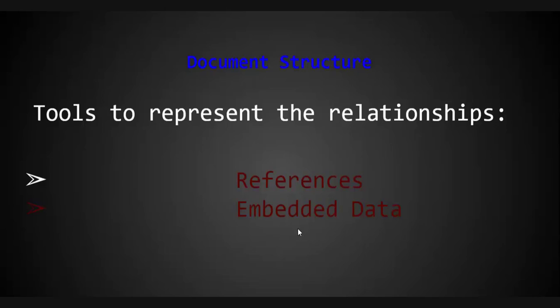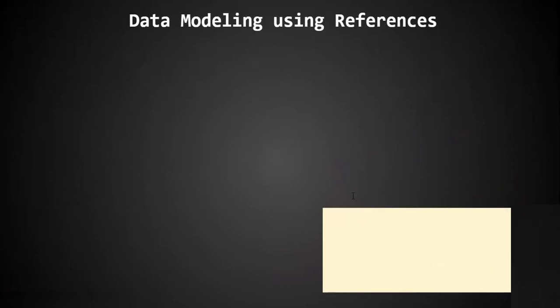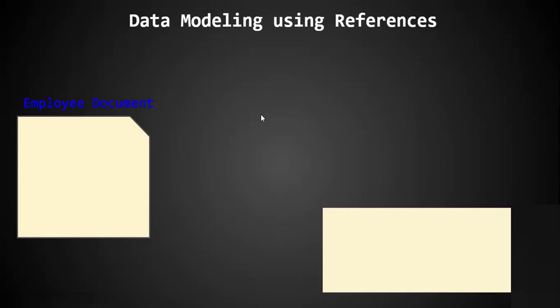In the last lecture we discussed data modeling and the two tools used in MongoDB. In this lecture we are going to look at one of them: references. In relational databases like MySQL or Oracle, you create two tables and use a foreign key to refer one table to another. In the same way, in MongoDB we can use a reference to link one document to another.